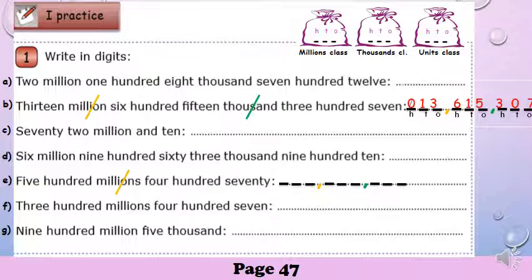Five hundred — before the yellow comma, we have five hundred. So we write five in the hundreds, and nothing in the tens and nothing in the ones, so we write zeros. After the million, we have no thousands — four hundred seventy and no thousands — so nothing in the thousands class, so we write zeros.